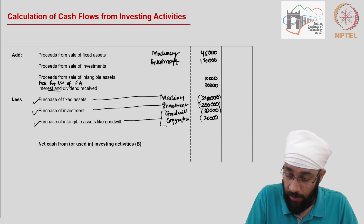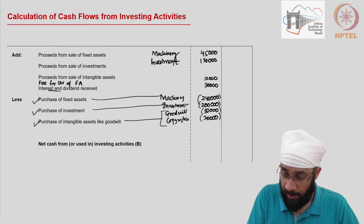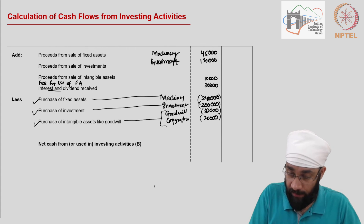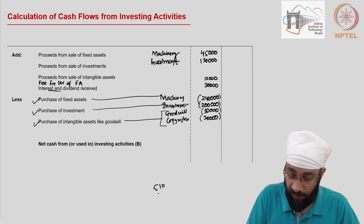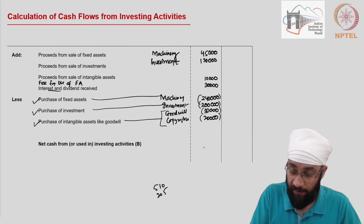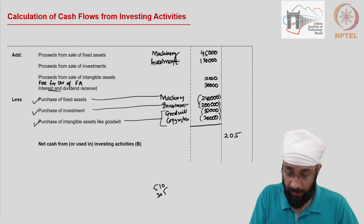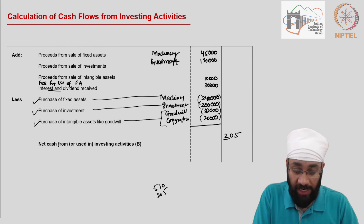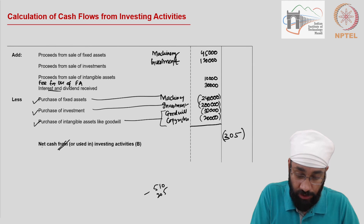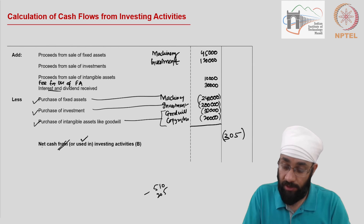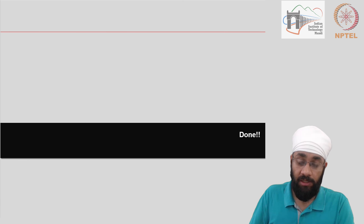I'm going to put parentheses around all these outflow numbers. Now we just sum these up. The outflows total 510,000 and the inflows total 205,000. So net cash used in investing activities is 305,000 — it is a negative number because 510,000 was the outflow side. That's how you prepare the cash flows from investing activities.